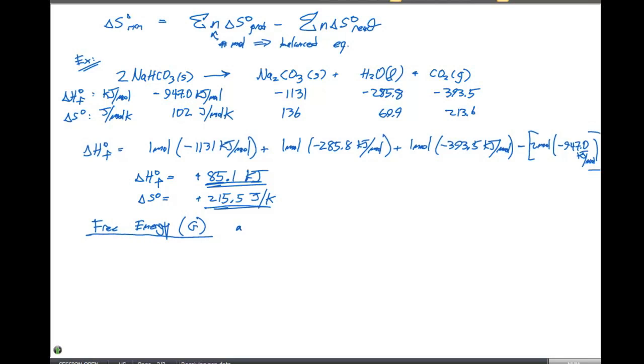This is also an extensive property. So what we can say about this is that delta G naught is the free energy change when the reactants and products are in their standard states. And the next question we want to ask ourselves is, what are these standard states?